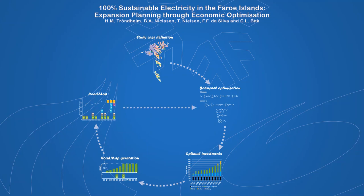However, we ensured that the proposed roadmap was close to the optimal solution by doing a second run in Balmorell using the roadmap as committed capacities. The optimality of the roadmap was validated by comparing the economics of the roadmap to the optimal solution.